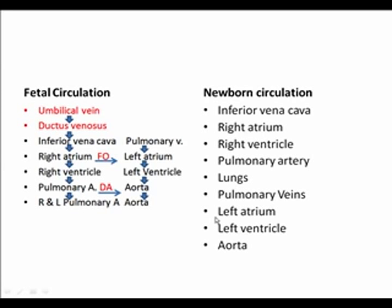In fetal circulation, blood comes from the left umbilical vein through the ductus venosus to the inferior vena cava. From there it can go two directions: one pathway is right atrium → right ventricle → pulmonary artery → ductus arteriosus → aorta and systemic circulation. The other pathway is right atrium → foramen ovale → left atrium → left ventricle → aorta.